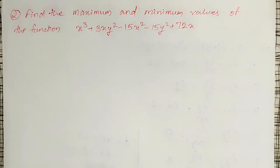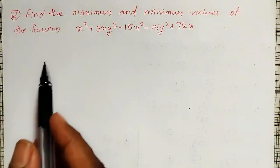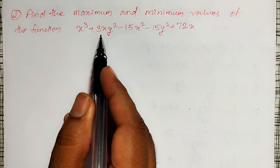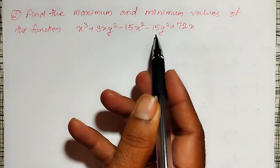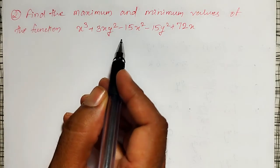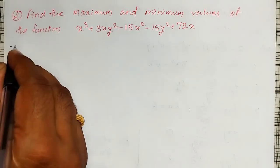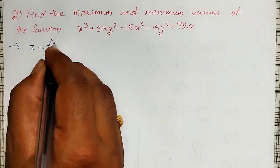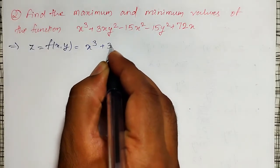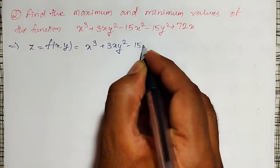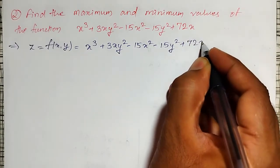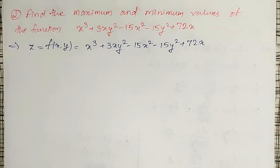Welcome friends. In this video, I am going to discuss maximum and minimum values of functions. The function is f(x,y) = x³ + 3xy² - 15x² - 15y² + 72x, a function of two variables. Let me call this as z = f(x,y) = x³ + 3xy² - 15x² - 15y² + 72x as a function of two variables.